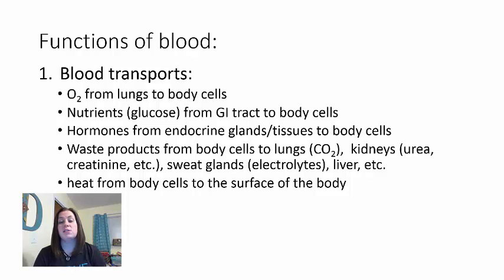Blood also helps remove waste products from body cells. For example, it picks up carbon dioxide from tissues and drops it off at the lungs so you can breathe it out. In the kidneys, blood gets filtered for other waste products collected at the tissues, like urea and creatine. Waste products also leave through sweat glands and the liver handles things like bilirubin.